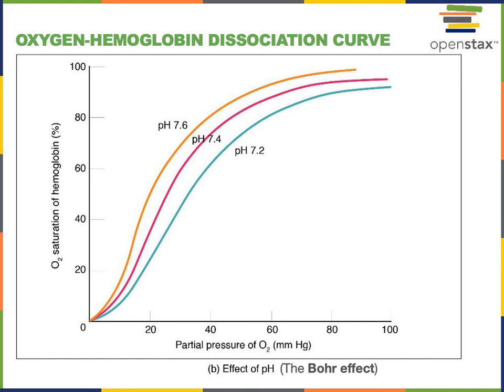This effect of pH on the affinity of hemoglobin for oxygen is known as the Bohr effect. The Bohr effect describes decreased affinity of hemoglobin for oxygen in response to low pH, or conversely, increased affinity in response to elevated blood pH. Similarly, carbon dioxide causes a decrease in hemoglobin's affinity for oxygen, which helps stimulate delivery of oxygen in tissues where CO2 concentration is increasing and pH is decreasing, releasing oxygen into those tissues with the highest metabolic demand.